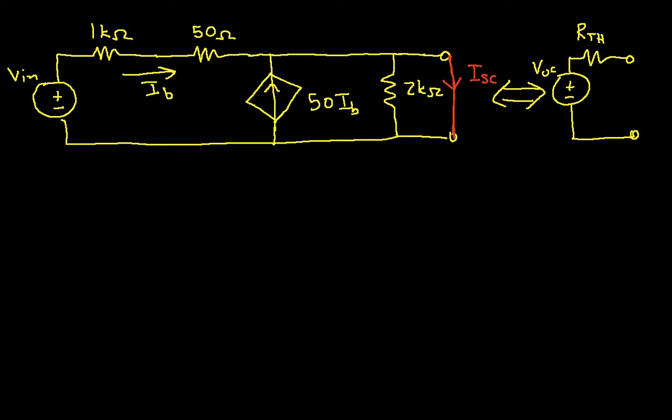This is going to be a little strange in the sense that you're often not used to working with things like this. So if I short these two terminals together to get ISC, the voltage across them is 0, which means that the voltage across this resistor is 0, which means that the current through this resistor is also 0.